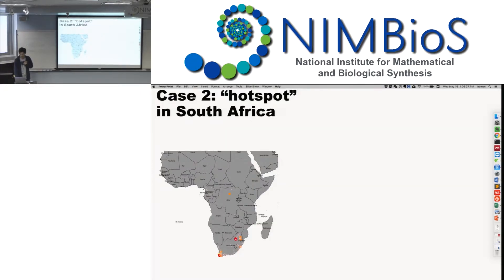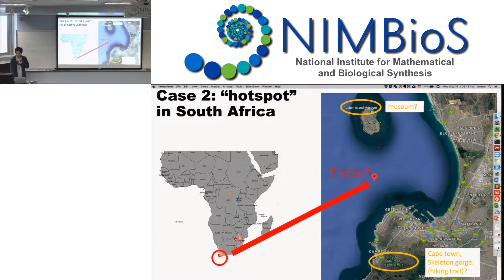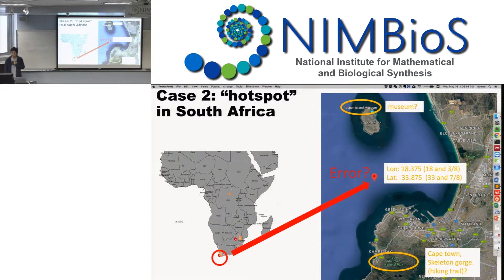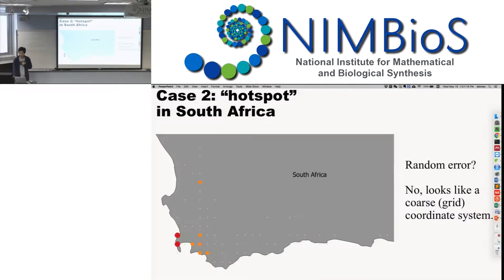In the second case, we look at the hotspot in South Africa. We zoom into the map and the point falls exactly in the ocean. We have a few hypotheses: first, it is from a nearby museum; second, it is from a national park, because we found some text description of a hiking trail in that national park; third, the coordinate — if you look closely, it's 19.375, which is actually 18 plus 3.8, and similarly 33 plus 7.8 — this represents a coarse coordinate system. When we zoom out in South Africa, we see an evenly-spread hotspot pattern, which supports the third hypothesis of a coarse-gridded coordinate system.